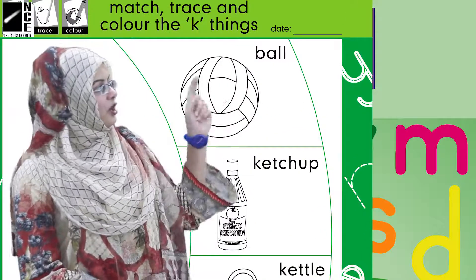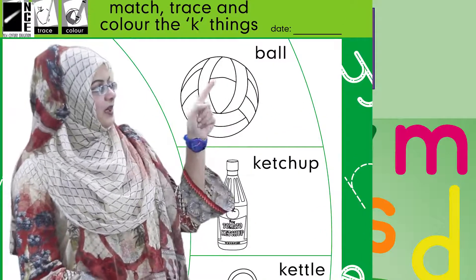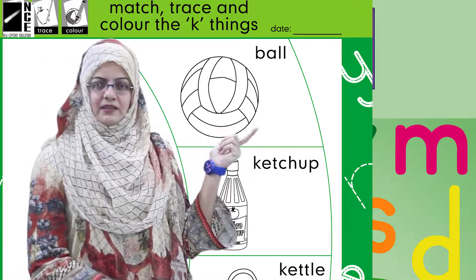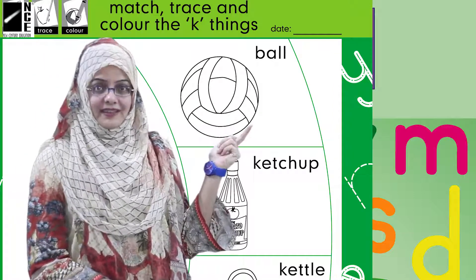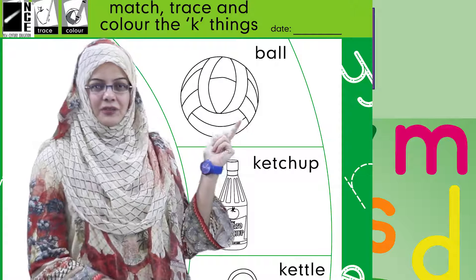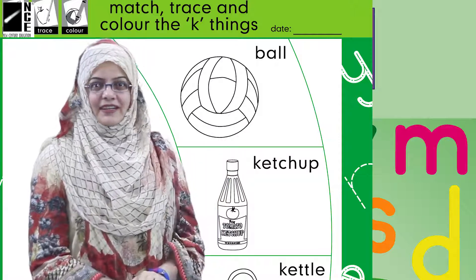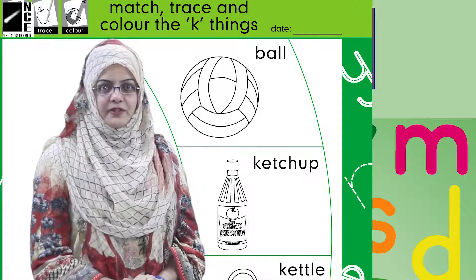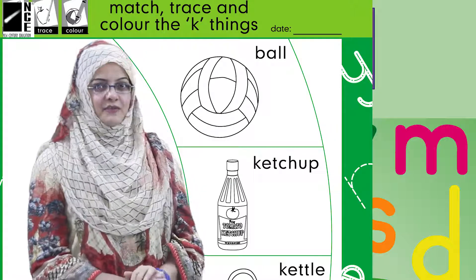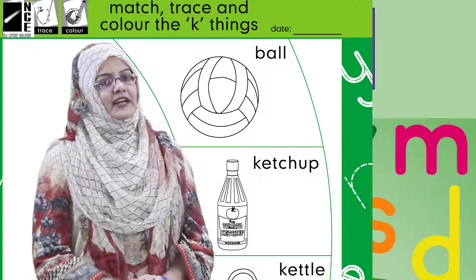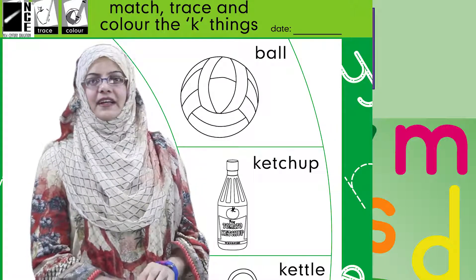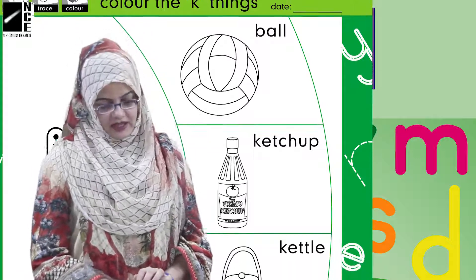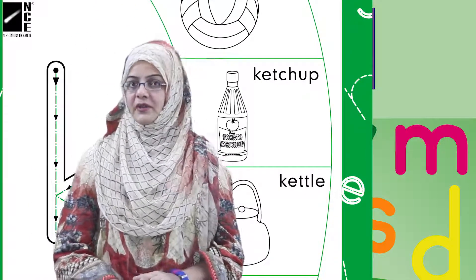اسی طرح ہمارے پاس first picture میں ہے ball اور car۔ Ball and car — do the beginning sounds of the words match? بچوں، نہیں نا — مجھے بھی match نہیں لگ رہی۔ تو ہم اس کو چھوڑ دیتے ہیں اور second picture کی طرف چلتے ہیں۔